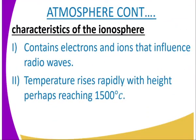We go to the ionosphere — this is the last layer. It contains electrons and ions that influence radio waves. The temperature rises rapidly with height until it reaches 1,500 degrees Celsius. This is because it contains another ozone layer that absorbs the ultraviolet rays that are not supposed to reach the Earth's surface.